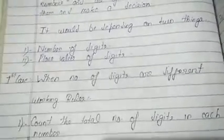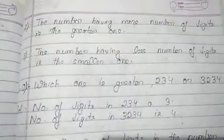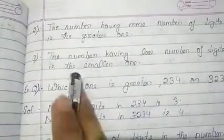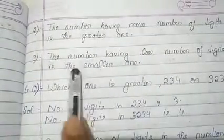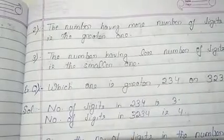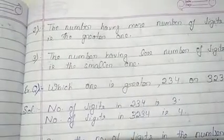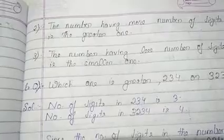The first case is when the number of digits are different. The working rule here is: first, count the total number of digits in each number. The number having more digits is the greater one, and the number having fewer digits is the smaller number. Simply count the digits and decide which number is greater or smaller.